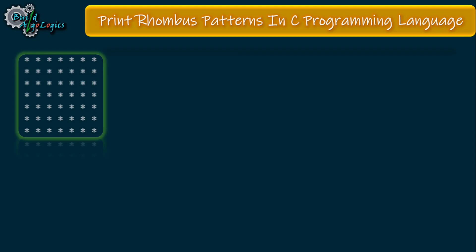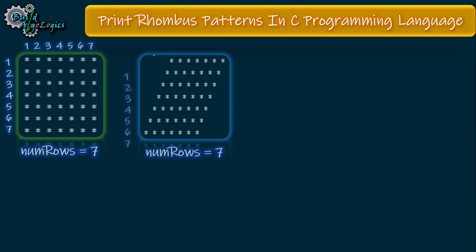This is the square pattern that we drew earlier. Now we'll see how we can write code for printing this rhombus pattern. In square pattern we have number of rows as 7 and number of columns as 7. Similarly in rhombus pattern we have number of rows as 7 and number of columns as 7, but in rhombus we print this extra part here, which is nothing but these spaces.